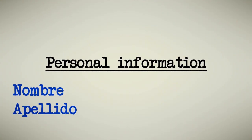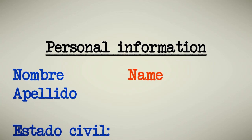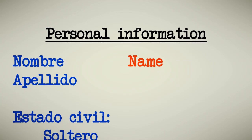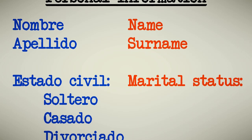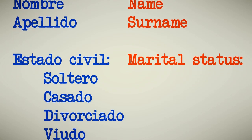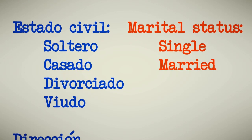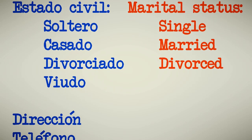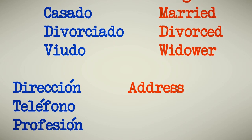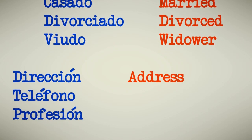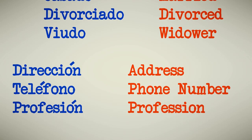Personal information. Let's translate this form. Nombre — Name. Apellido — Surname. Estado civil — Marital status: Soltero (Single), Casado (Married), Divorciado (Divorced), Viudo (Widower). Dirección — Address. Teléfono — Phone number. Profesión — Profession.